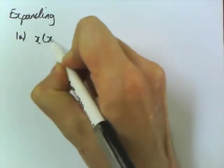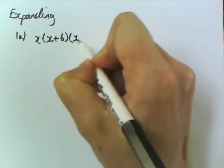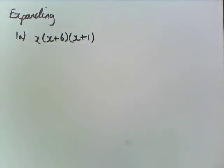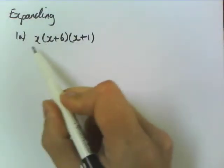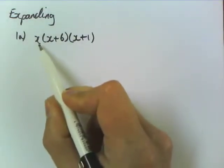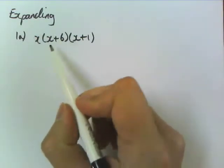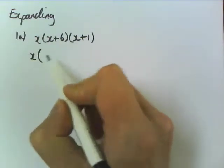1a is x, x plus 6, x plus 1, and it's quite simple to do. All you do is you do your standard FOIL on two of them, and then you multiply everything by the third term in here. So if I do my FOIL, we'll leave the x out the front.